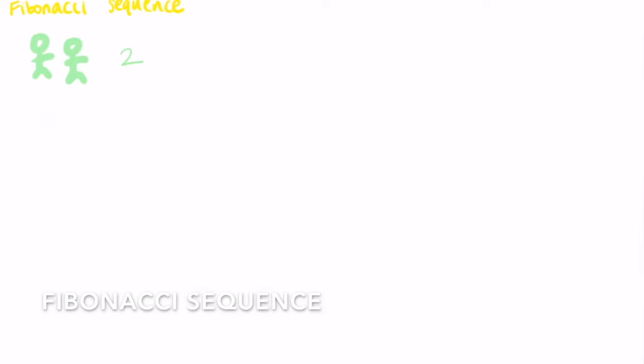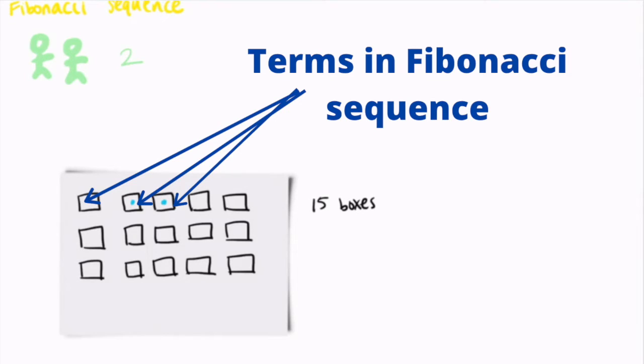This activity will have two parts. First, let's introduce you to the Fibonacci sequence. Gather into groups of two. Each group should begin by drawing 15 boxes on a sheet of blank white paper. Leave the first box empty. Draw one circle in the second box and one circle in the third box. Each box represents a number in the Fibonacci sequence.